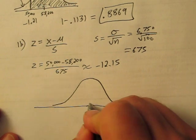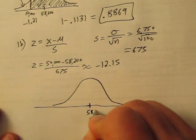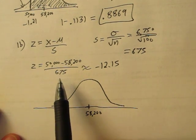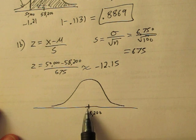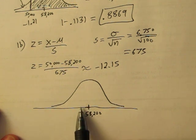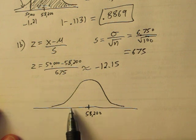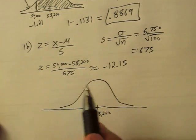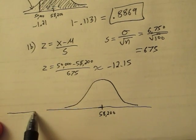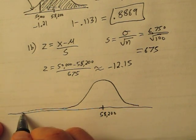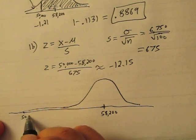Our mean is still at 58,200, but our standard deviation is now 675, one tenth the previous standard deviation. By the time we get two standard deviations away, we're at about 57,000. To get down to 50,000, we would be way out here in the tail, maybe over here, but I bet it's further away than that.